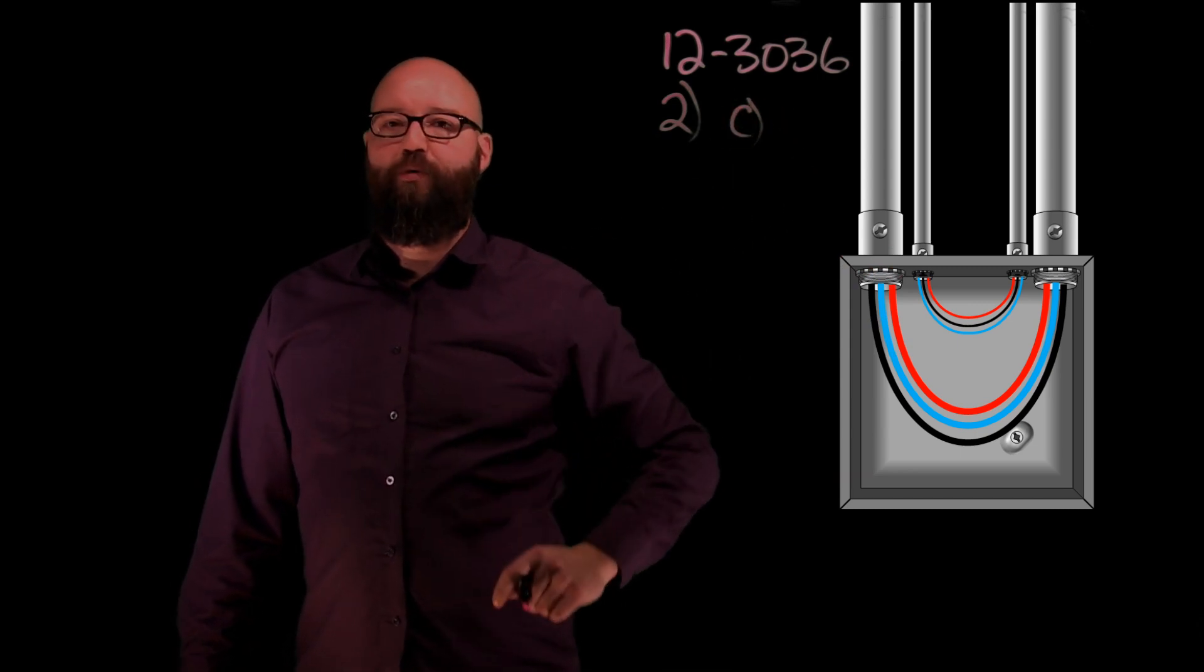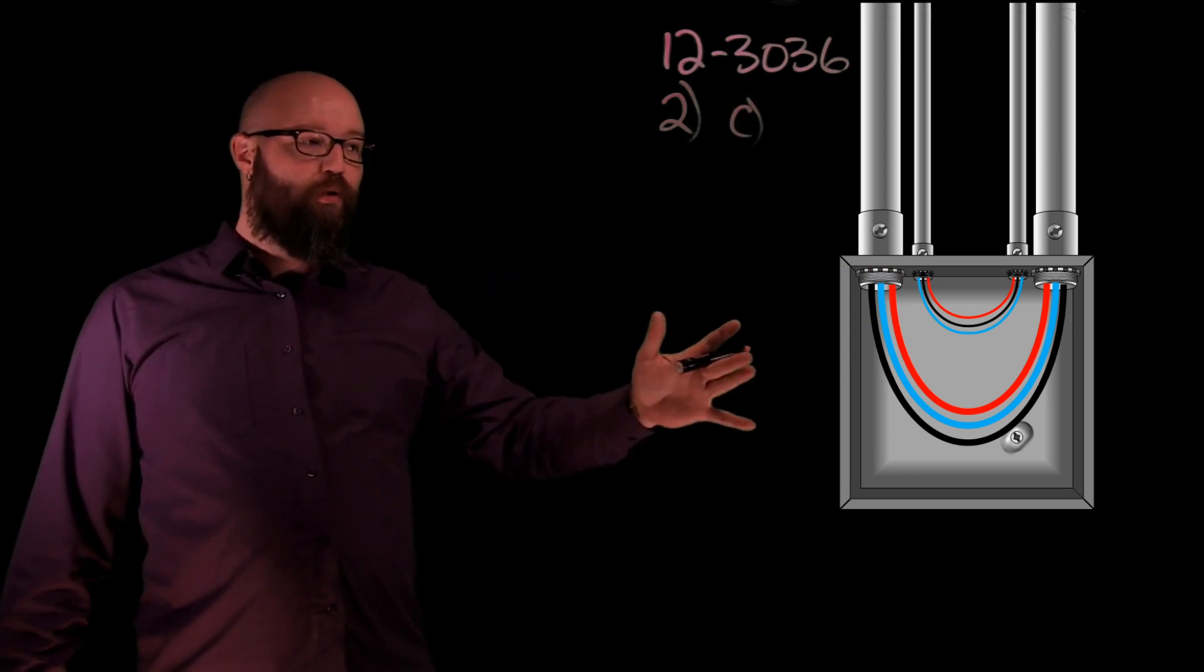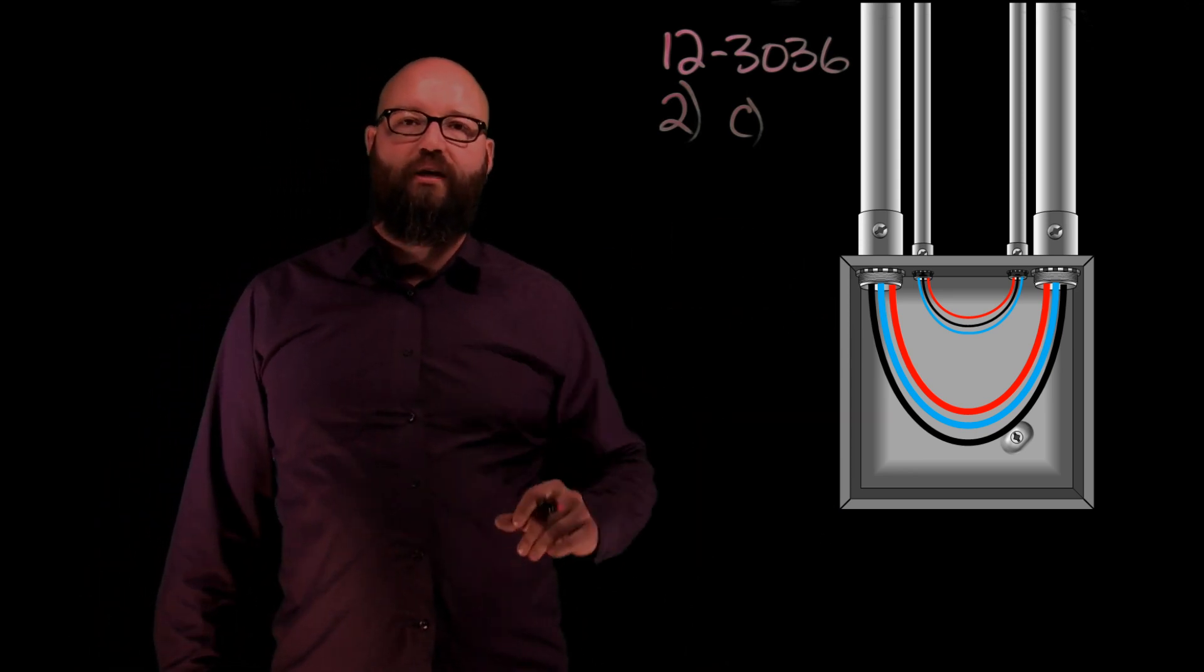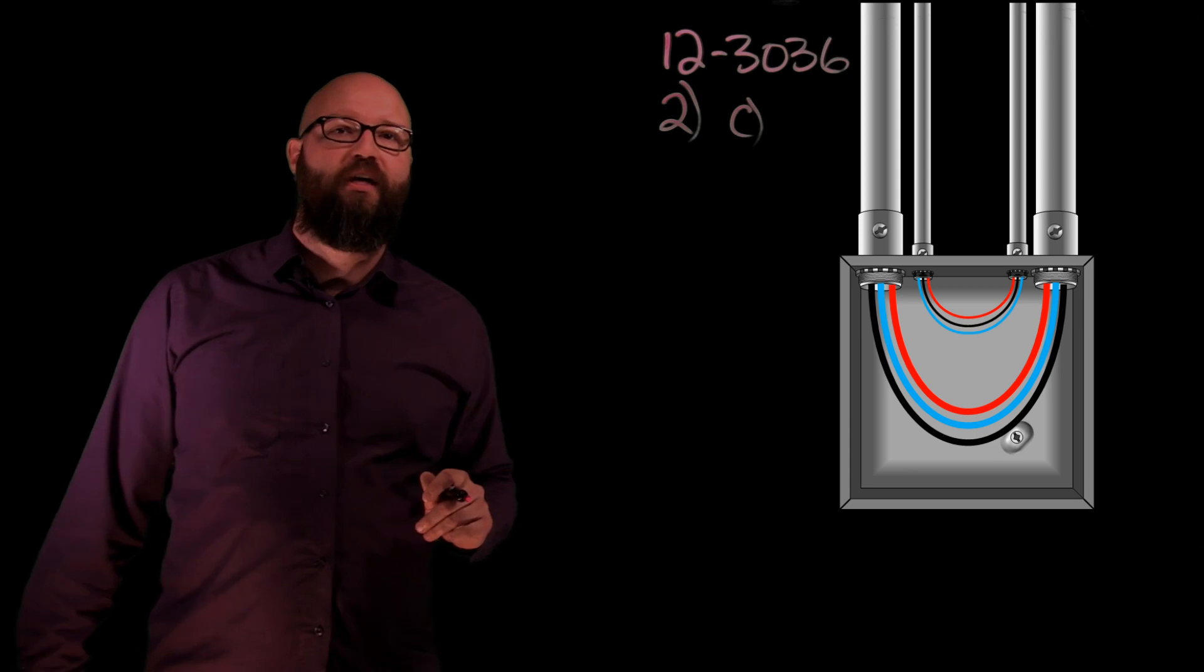Item C deals with pull boxes that are U-pulls and angle pulls. We're just dealing with the U-pull. In the next video we'll take a look at angle pulls as well, how to calculate those.